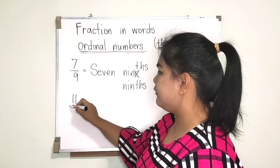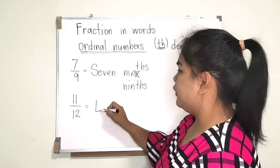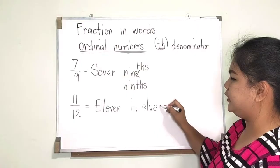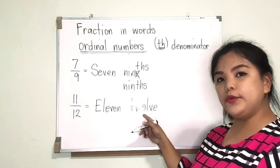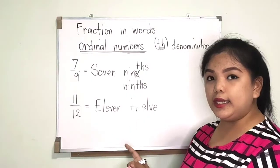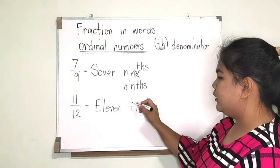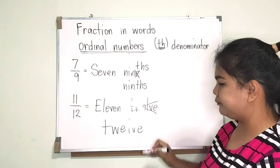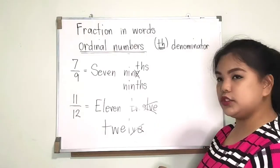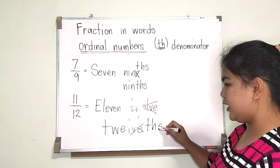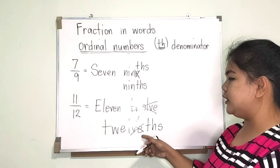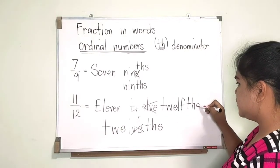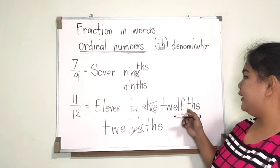How about 11/12? The denominator is twelve, spelled T-W-E-L-V-E. We do not write it as 'twelve' because that is not an ordinal number. There is VE at the end, so you change VE to F and write THS. So it becomes T-W-E-L-F-T-H-S — 'twelfths.' So 11/12 is written as 'eleven twelfths.' That is the answer.